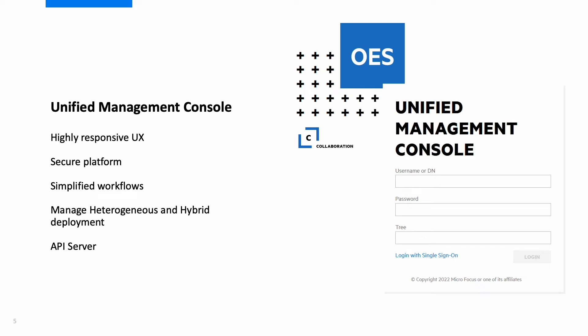Unified Management Console, or UMC in short, replaces several web management tools including iManager and Remote Manager. UMC is a highly responsive web application for managing any small or large heterogeneous deployments. Contrary to iManager, which was built for directory management and later extended, UMC is built ground up with file and print management as the primary goal. The simplified workflows support managing any feature or service without having to switch to another tool. The built-in API server provides functionality necessary for UMC and is also available to you for customization and automation.